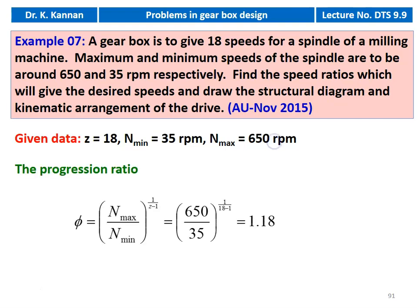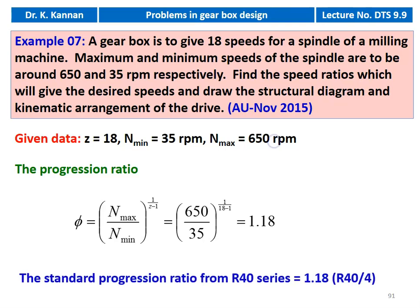We calculate the progression ratio φ = (maximum speed / minimum speed) to the power of 1/(Z−1). So, 650 divided by 35 to the power of 1/(18−1) equals 1.18. From the R40 series, the standard progression ratio of 1.18 is available — it is R40 by 4.